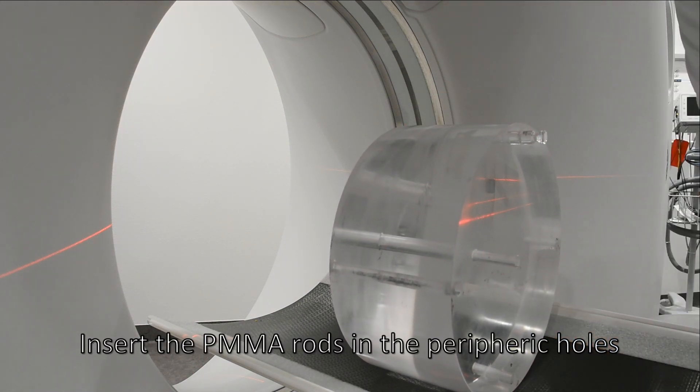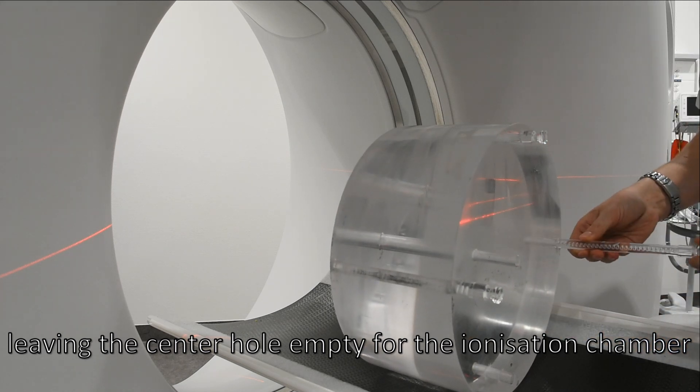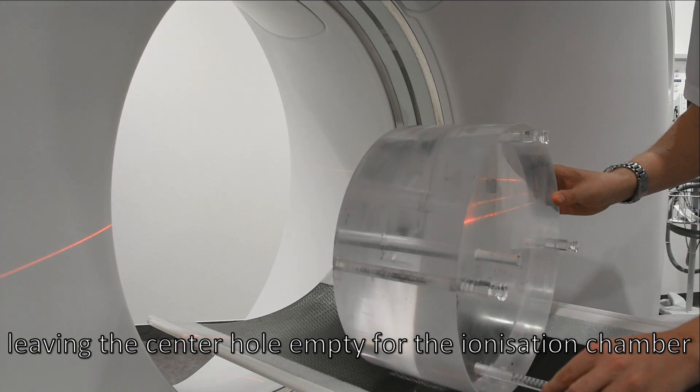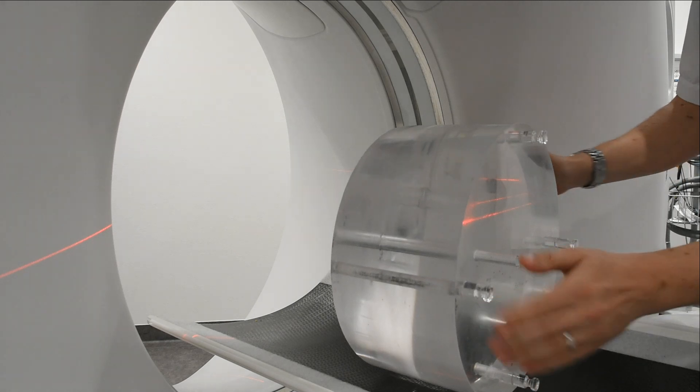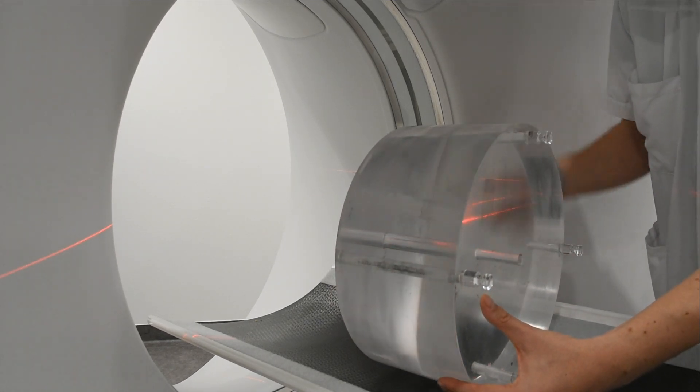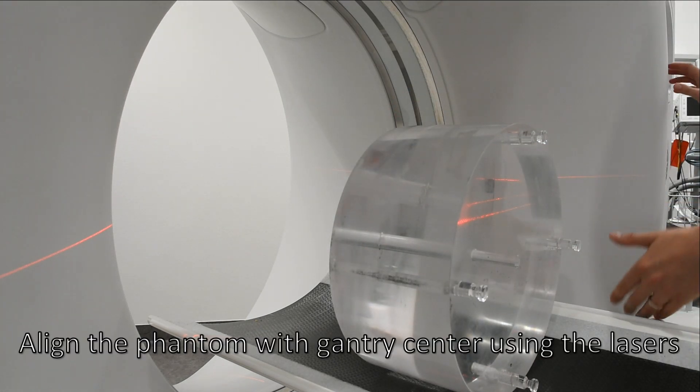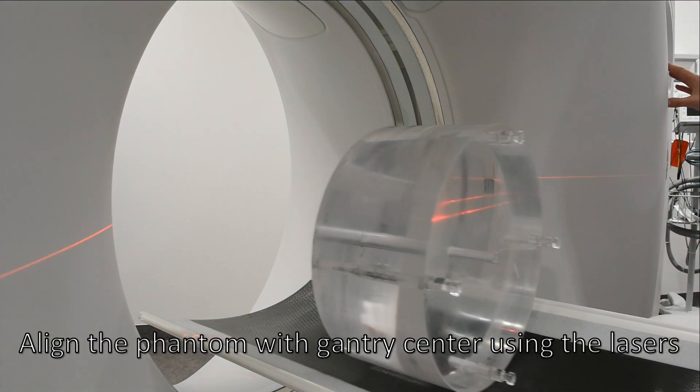Insert the PMMA rods in the periphery holes, leaving the center hole empty for the ionization chamber. Align the phantom with gantry center using the lasers.